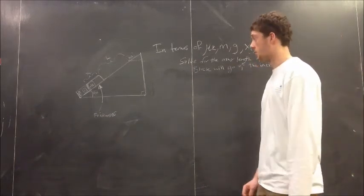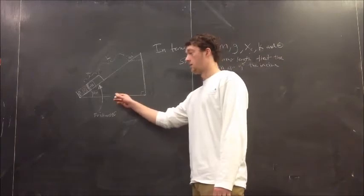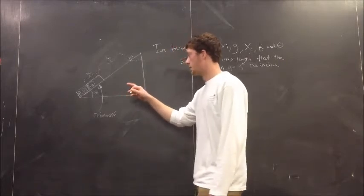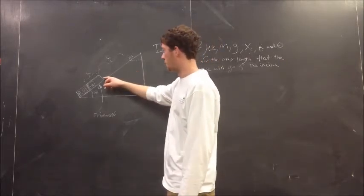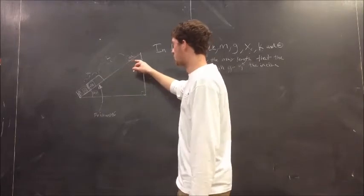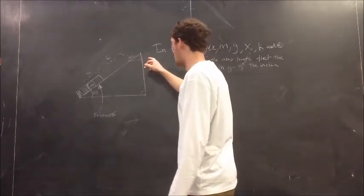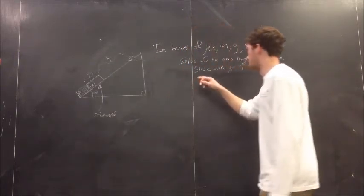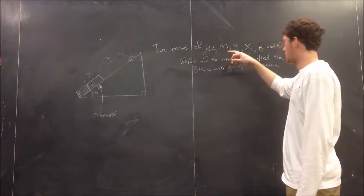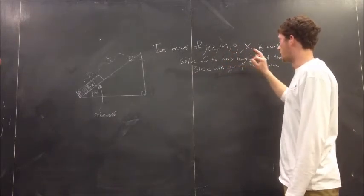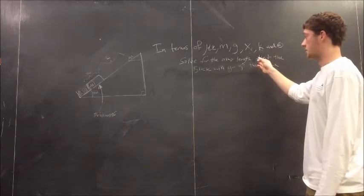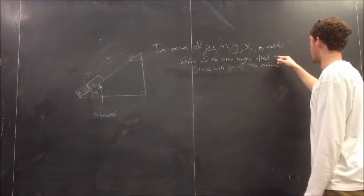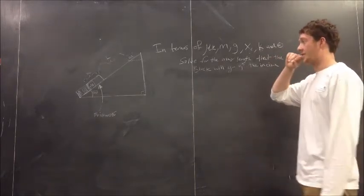The question we're considering is one where there's a block of mass m in a spring gun, and we're trying to find the distance l from the end of the spring gun that the block will travel before it stops and starts to reverse direction. We're going to solve this in terms of the coefficient of kinetic friction, the mass of the block, the acceleration due to gravity, the distance of compression, the constant k of compression, and the angle of the incline.